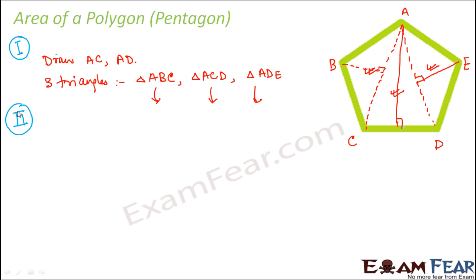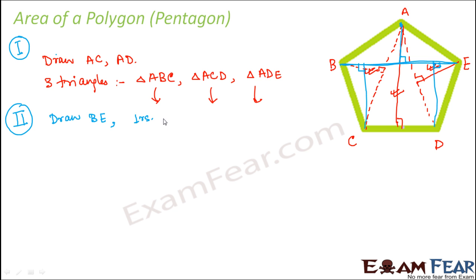We also have option number two, where we divide this pentagon into three triangles and one rectangle. For the same pentagon, we draw diagonal BE, and then we draw perpendiculars from the remaining vertices — from A, from C, and from D — onto BE. So in the second option, we draw one diagonal BE and perpendiculars from points A, C, and D on BE. Once we do that, we end up dividing the pentagon into three triangles and one rectangle.